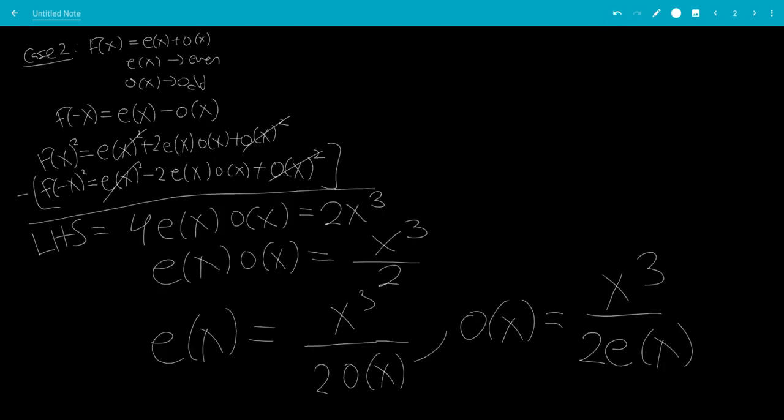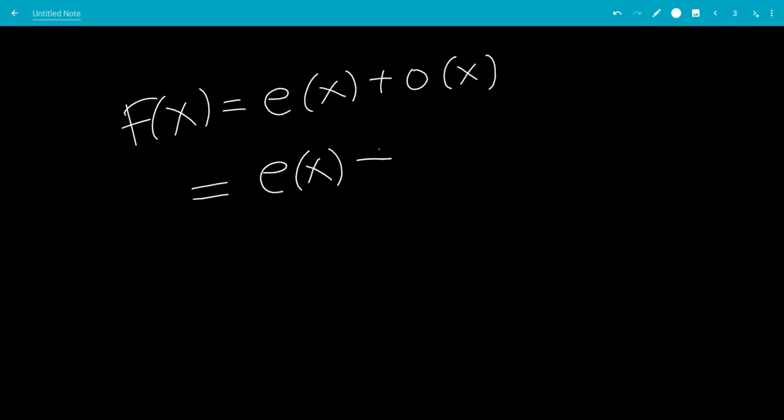So plugging that in, we get f(x) = e(x) + o(x). So let's say this is equal to e(x) + x³/(2e(x)). Or o(x) plus x³/(2o(x)).